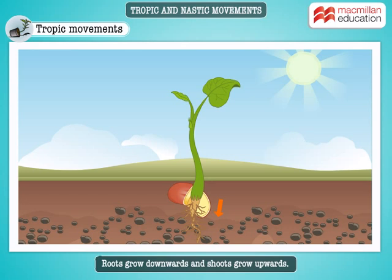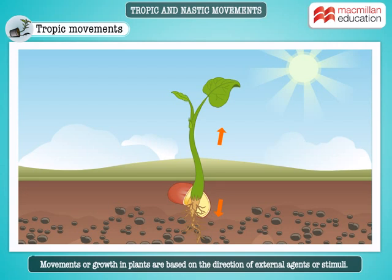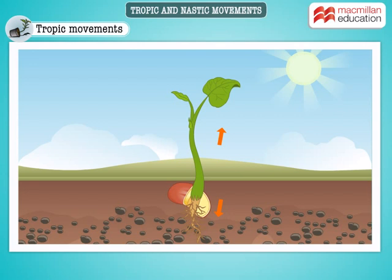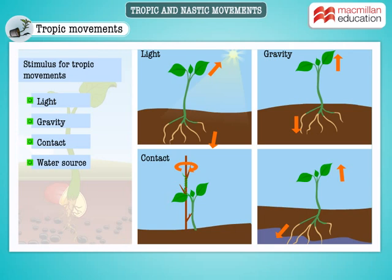Roots growing downwards and shoots growing upwards is a common phenomenon in plants. These movements or growth in plants are based on the direction of external agents or stimuli. A stimulus may be an external agent such as light, gravity, contact, or a source of water.